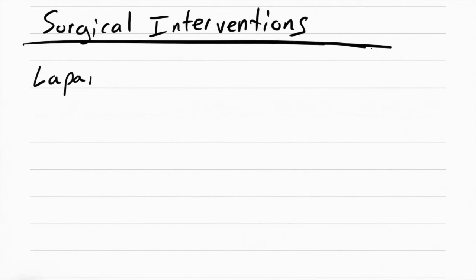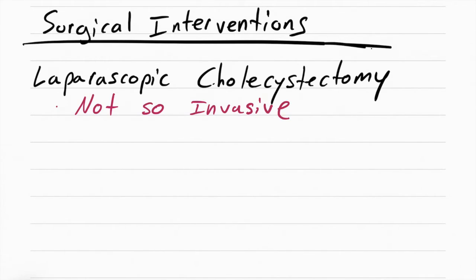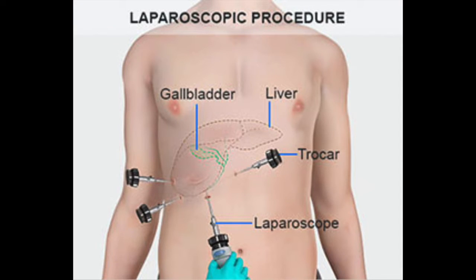The most common type of surgery is called laparoscopic cholecystectomy. This is not so invasive because they use cameras in tiny little incisions on the abdomen. They stick these cameras and these tools in order to cut the gallbladder and then pull it out. They also inflate the abdomen with CO2 in order to do the procedure.